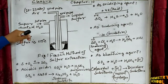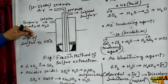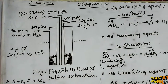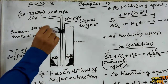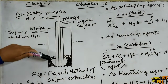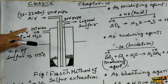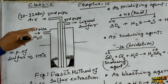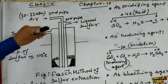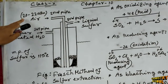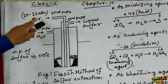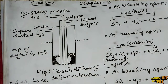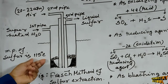Sulphur is a yellow color non-metal and it can be extracted directly from the mine by the Frasch process. In this process, three concentric pipes are inserted in the sulphur mine. Through the first pipe, superheated water is passed through the mine. Through the second pipe, air is passed with high pressure. The melting point of sulphur is 115 degrees centigrade.